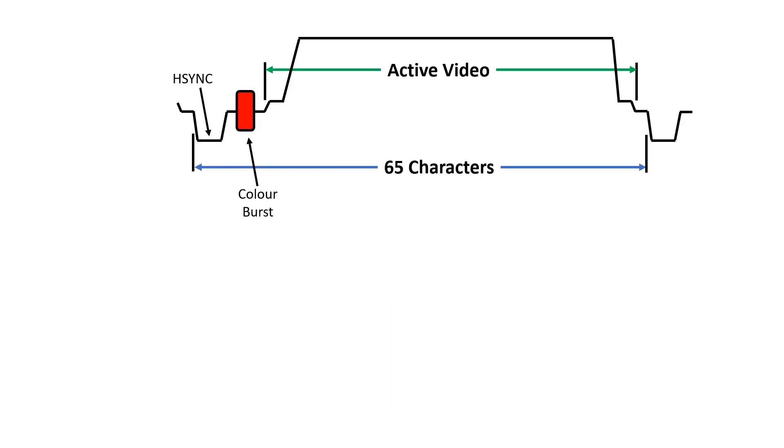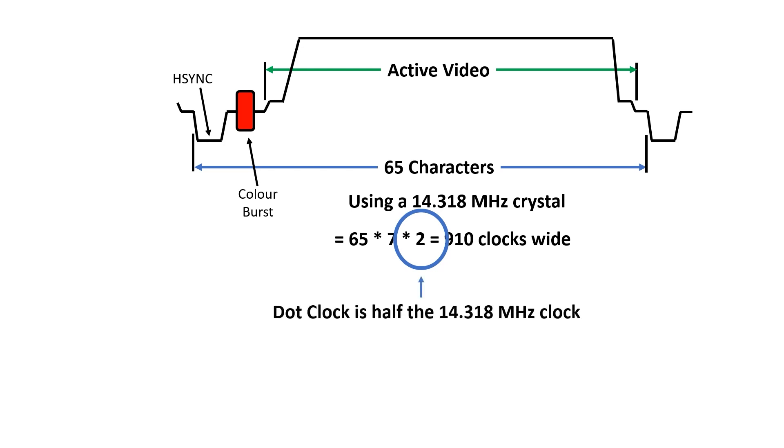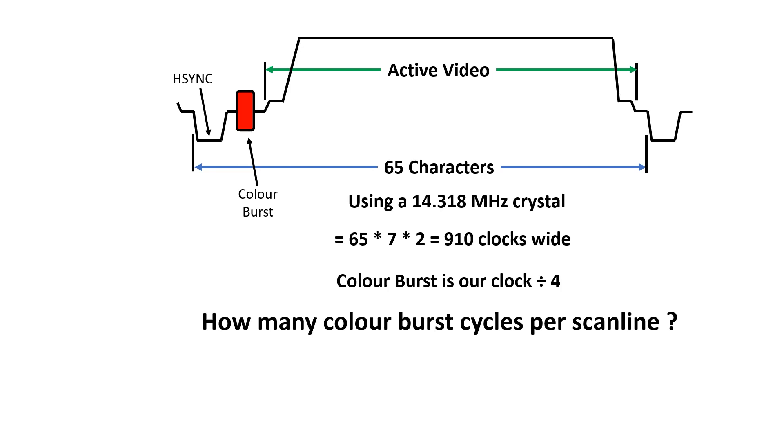Let's look at our scanline with the 14.318MHz crystal. 65 times 7 times 2 is 910. And we need this factor of 2 because our dot clock is half the frequency of our 14.318MHz clock. But our color burst is our 14MHz signal divided by 4. So how many color burst cycles in a scanline? 910 divided by 4, which is 227.5, and this 0.5 is going to be a real pain in the neck.